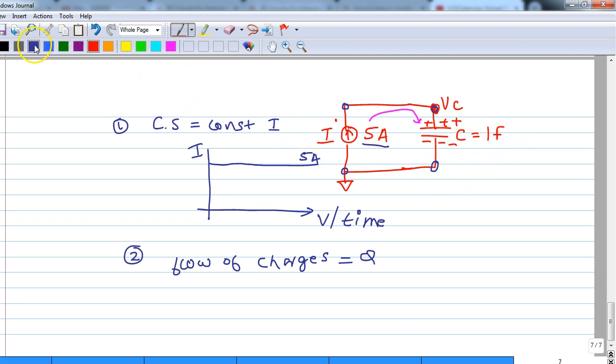We know that from the relation between Q, V and C that the capacitor voltage is given by Q by C. Now because the current source is putting more charges, you are actually increasing the Q. Therefore the capacitor voltage will rise.